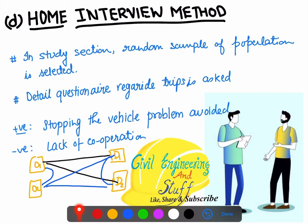The group of surveyors goes to the respective localities and houses of people present there and directly asks them. They explain they are from the traffic department and are looking into the commuting patterns in the zone to reach certain points. A well-prepared questionnaire is presented, and locals are asked to answer — the questionnaire is mostly about the trips they make.